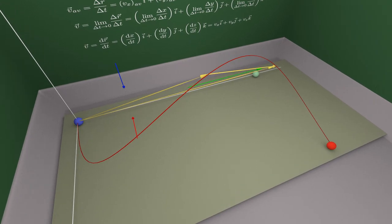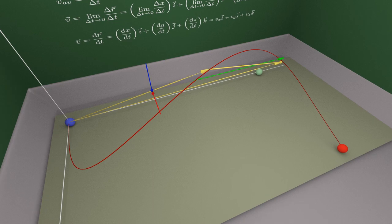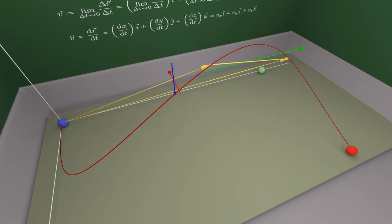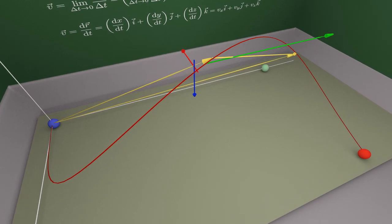Therefore, displacement can be represented as three consecutive displacements parallel to the axis.